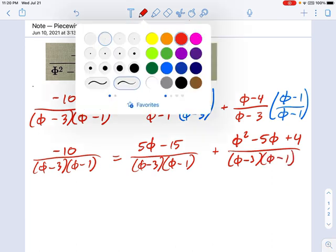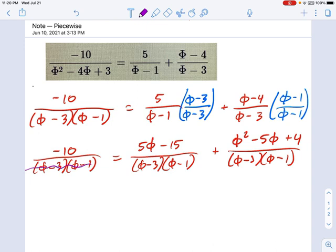So because the denominators are all equal, I'm just going to come through here and cancel them all out. I can do that because it's an equation. Don't try this with regular fractions, but once you see that equal sign in an equation, you can get away with a lot of stuff. So minus 10 equals 5 phi minus 15 plus, ooh, a lot of stuff here, phi squared minus 5 phi plus 4.